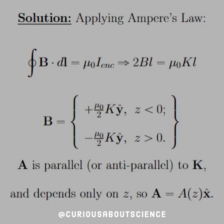So we'll find a B-field, which we see from Ampere's law is 2BL equal mu-naught kL. The L's cancel, so we divide by 2, and we see that B is equal to plus mu-naught over 2 times k in the y-hat direction for z less than 0, and negative for z greater than 0. Eventually we'll just put this in absolute value brackets to take care of that.